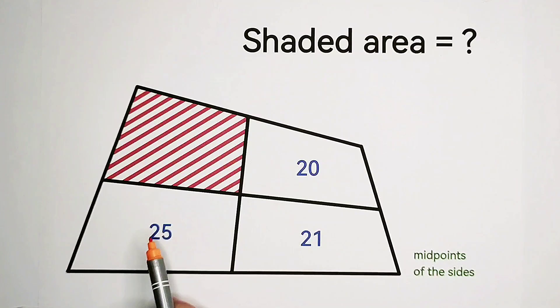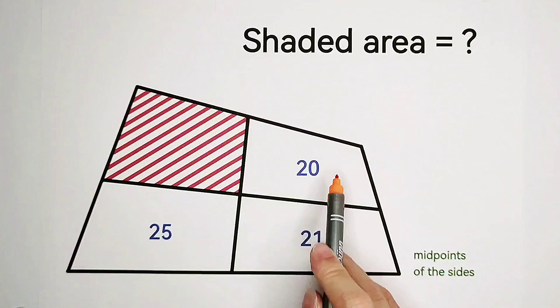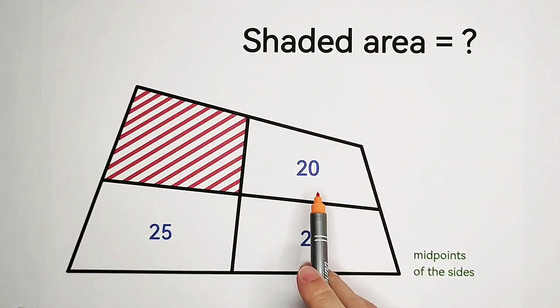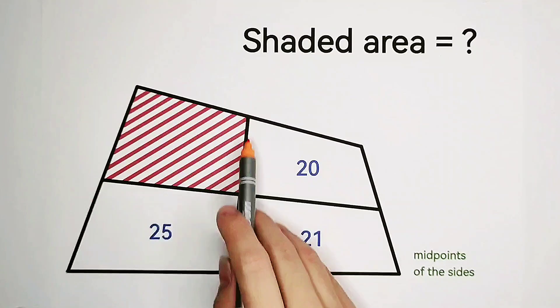And they divide our big quadrilateral into four small ones. And the areas of three of them are known. The area of this one is 20, the area of this one is 21, and the area of this one is 25. Now, our question is, how large is the area of our fourth small quadrilateral? How large is the shaded area?